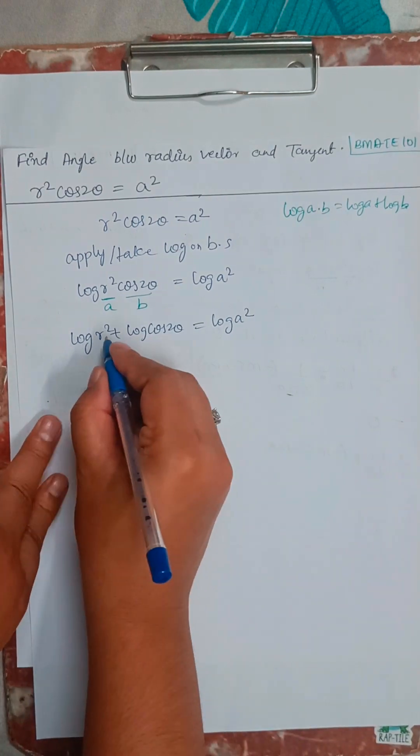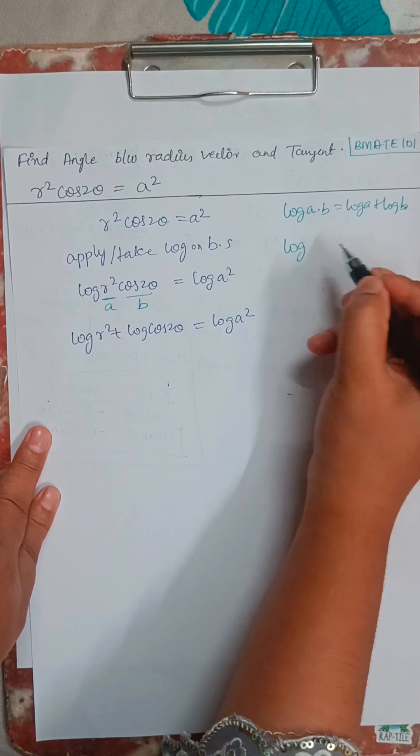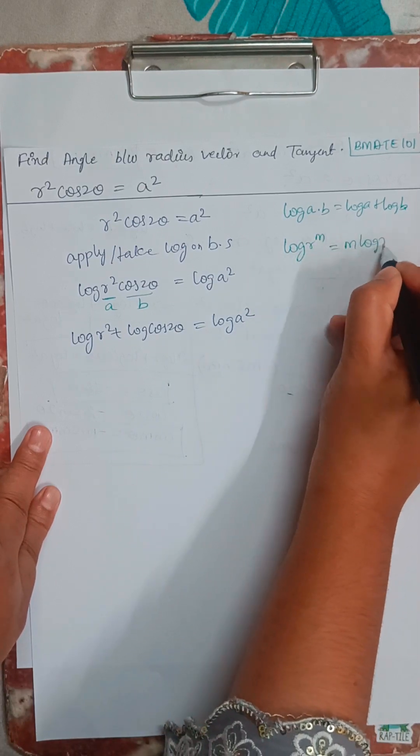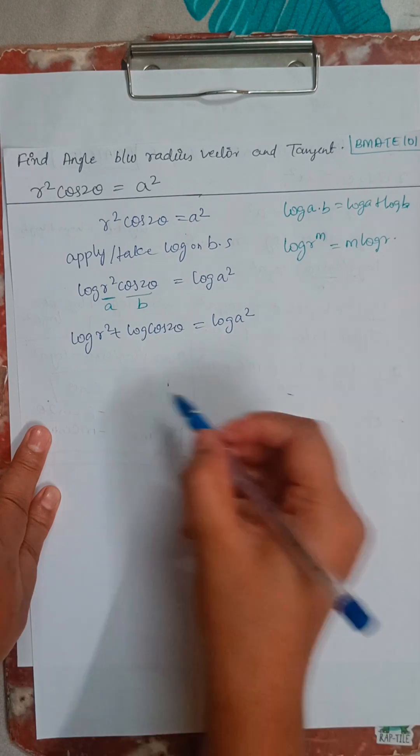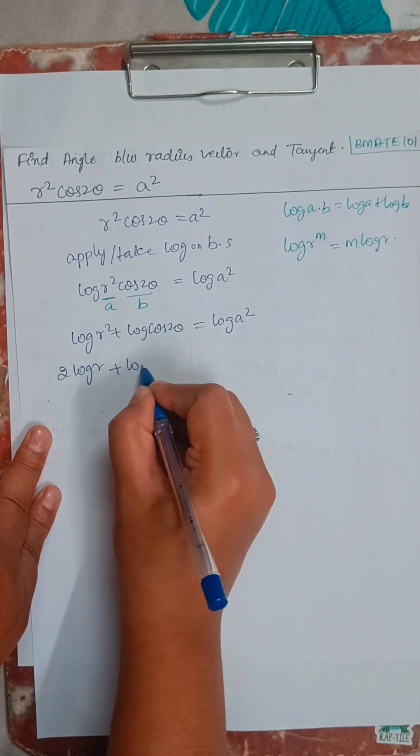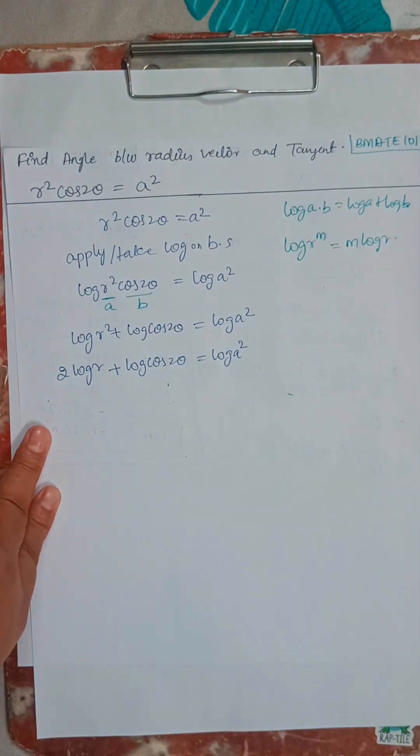Now we will expand this. Log of r to the power m is going to be m log r. So I will take 2 log r plus log cos 2 theta equals log a squared.